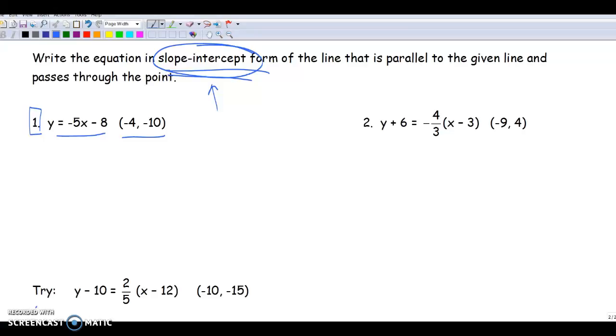So now we're going to try and do slope-intercept form. We're going to write the equation of a line that's parallel to the given line through slope-intercept form. So we've got this equation here, y equals negative 5x minus 8, and we're given this point.